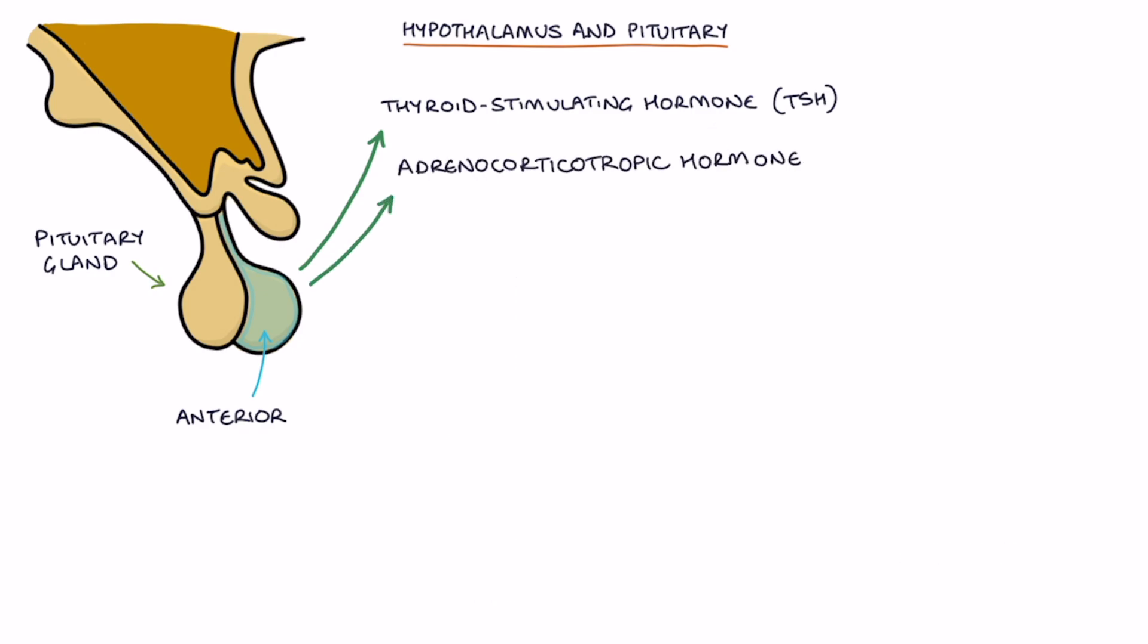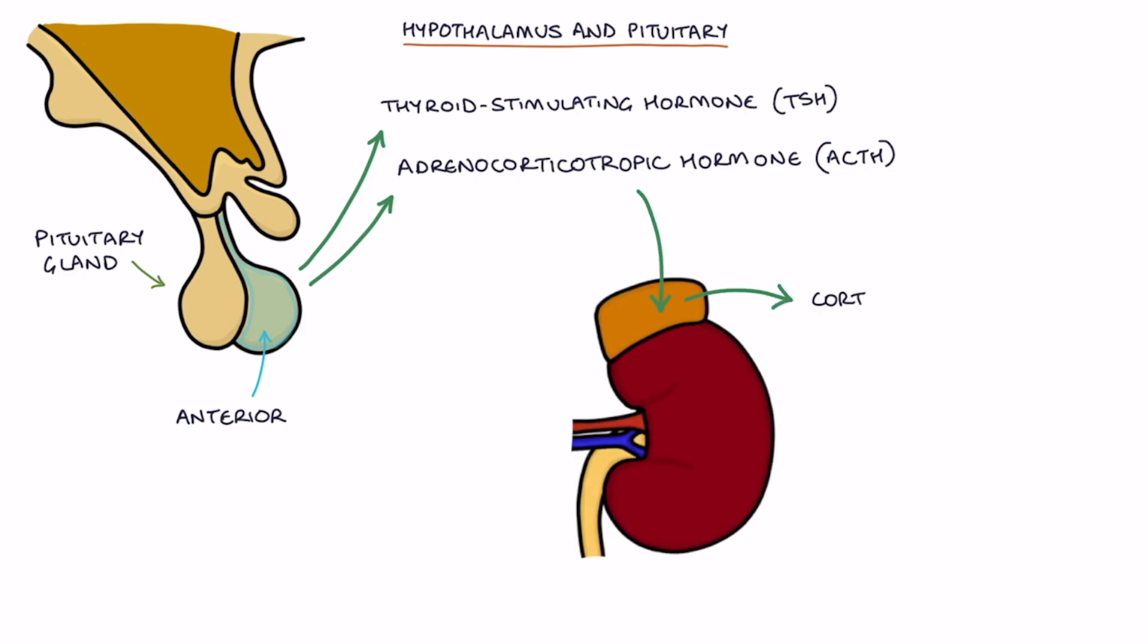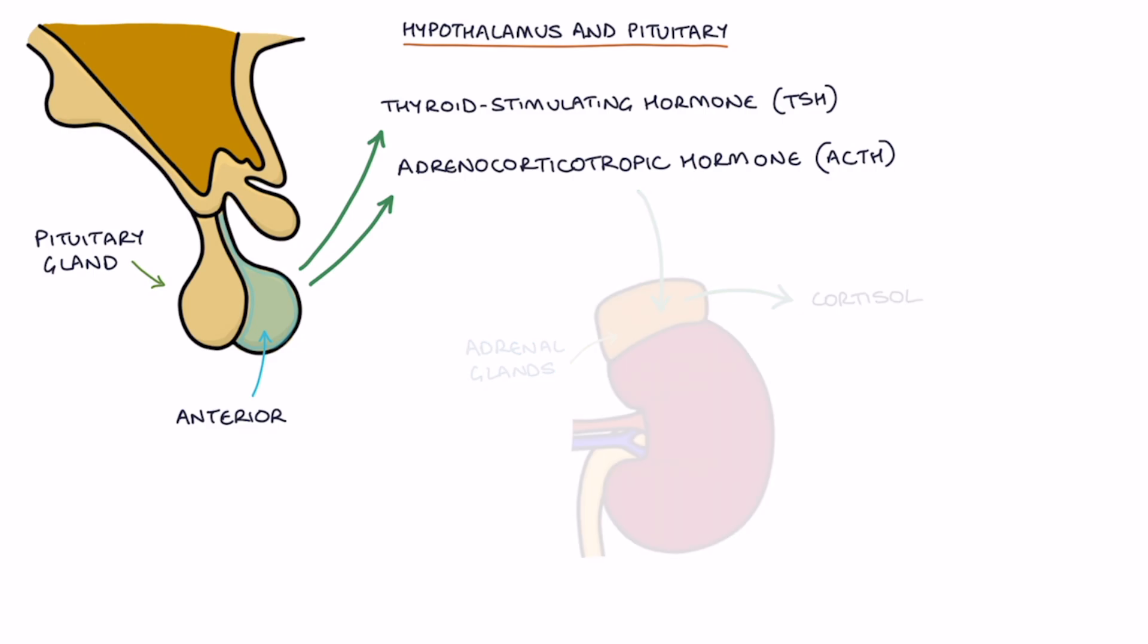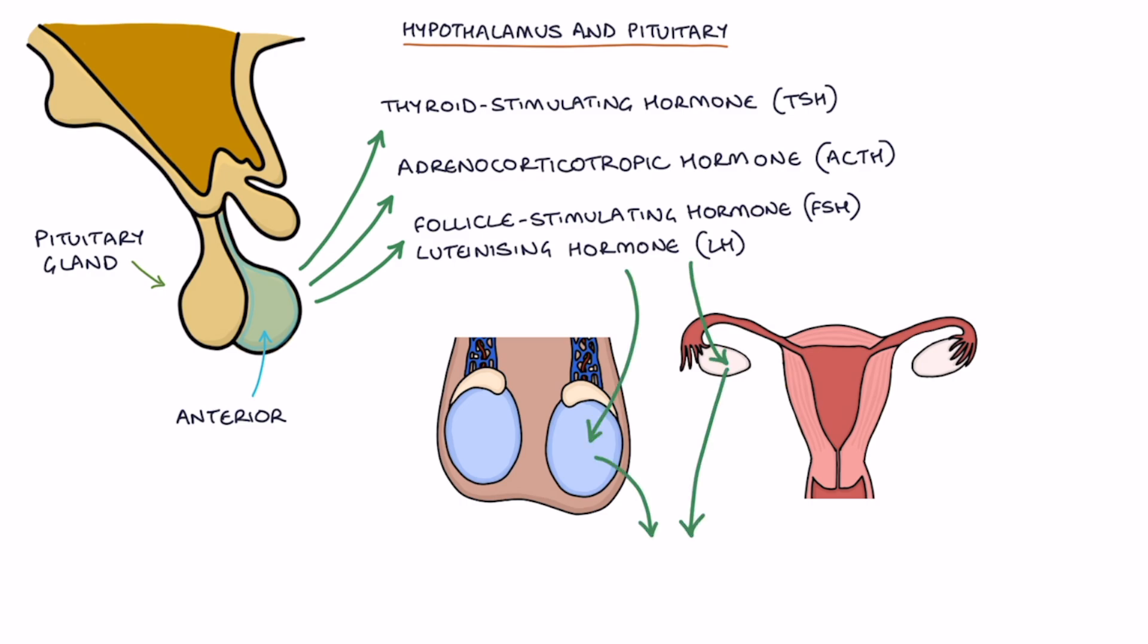Adrenocorticotropic hormone or ACTH which stimulates cortisol secretion by the adrenal glands. Follicle-stimulating hormone or FSH and luteinizing hormone or LH which control sex hormone secretion by the gonads which are the testicles in males and the ovaries in females.